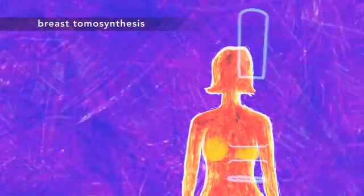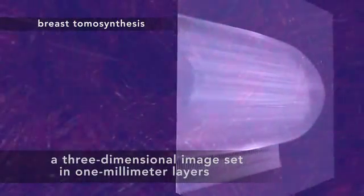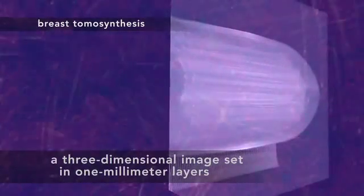That's because the x-ray arm swings over your breast, gathering enough extra information to create a three-dimensional image set. So now the doctors can see and search through your tissue in one-millimeter layers.